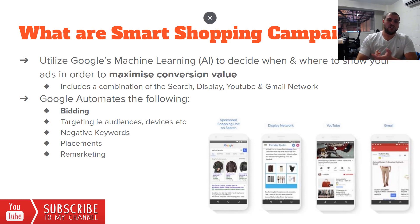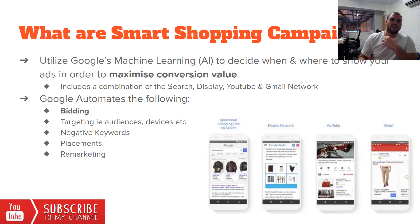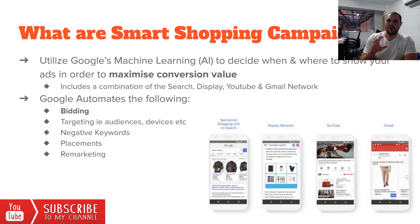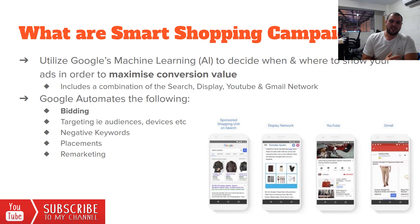It also automates targeting — audiences, devices, and similar factors are all handled in the background. There are no negative keywords; if a keyword isn't giving results or maximizing conversion value, it should theoretically taper it back. Placements — where the ads show up — are also decided automatically, and remarketing is all covered under Smart Shopping. A standard shopping campaign does not have remarketing and does not appear on some of those other placements, especially things like Gmail.